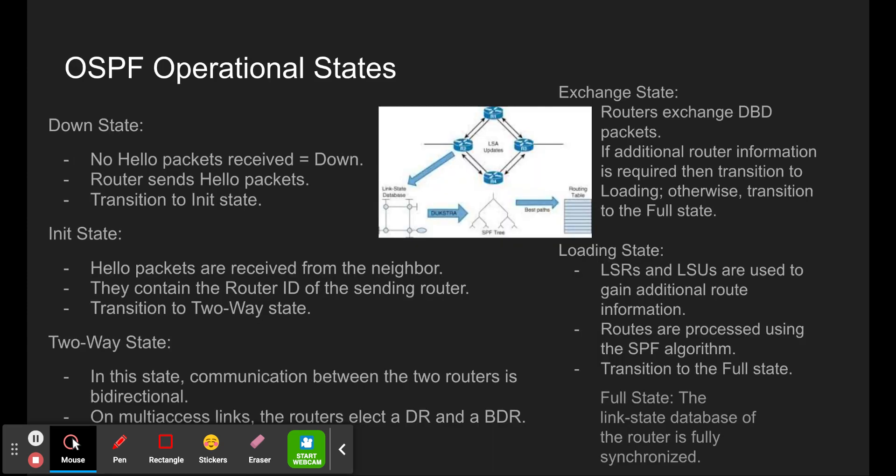OSPF operational states: The Down state — no hello packets are received, and the router sends hello packets. The Init state — hello packets are received from the neighbor containing the router ID of the sending router. The Two-Way state — communication between the two routers is bi-directional. The Exchange state — routers exchange DBD packets. The Loading state — LSRs and LSUs are used to gain additional route information. The Full state — the link state database of the router is fully synchronized.